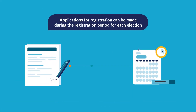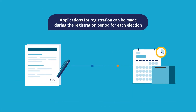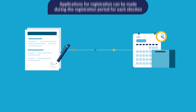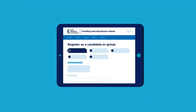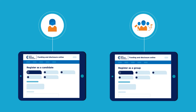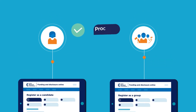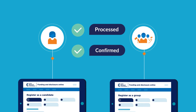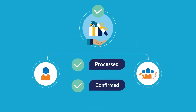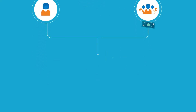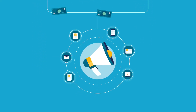Applications for registration can be made during the registration period for each election using Funding and Disclosure Online, the Electoral Commission's online portal for political participants. Registration only happens once we have confirmed it in writing. Candidates and groups can then lawfully accept donations and make payments for expenditure for their election campaign.